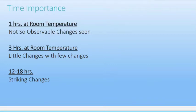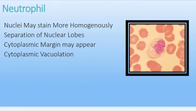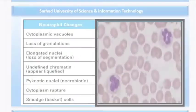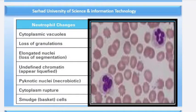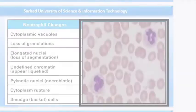Some, but not all, neutrophils are affected. The changes observed in neutrophils include nuclei that stain more homogeneously than in fresh blood, nuclear lobes that may become separated, and cytoplasm margins that may appear ragged or less well defined. Small vacuoles appear in the cytoplasm.